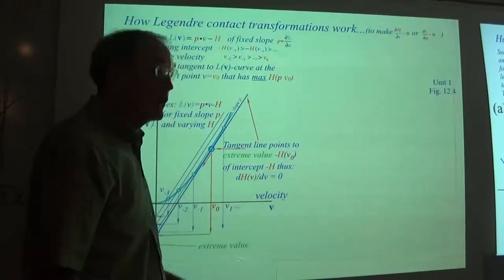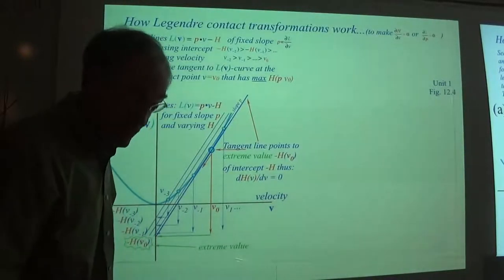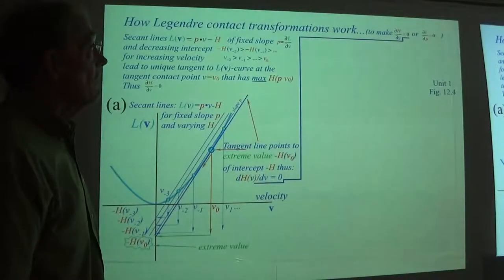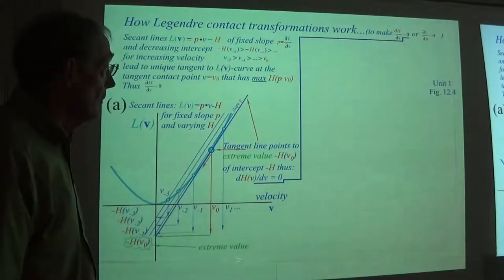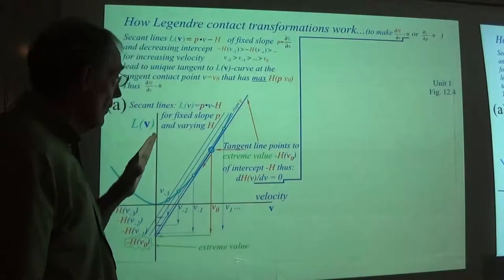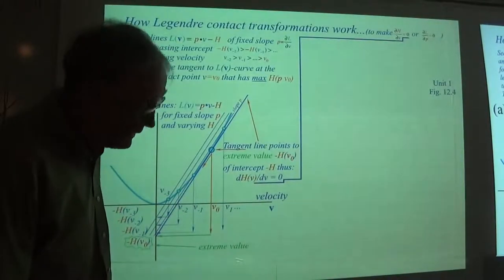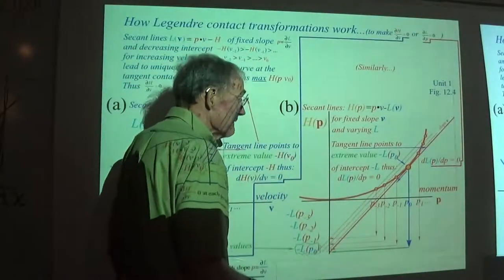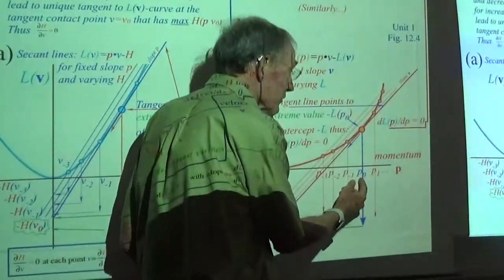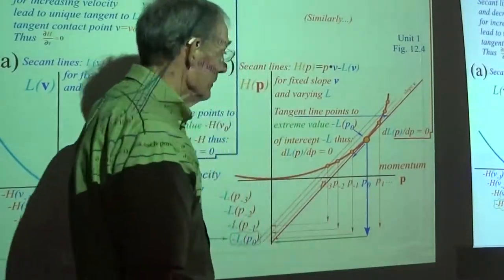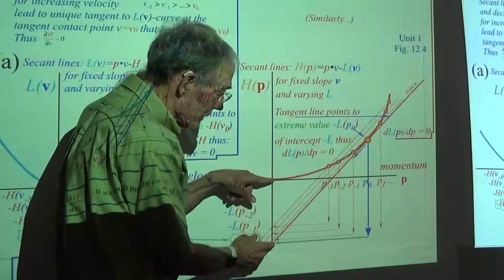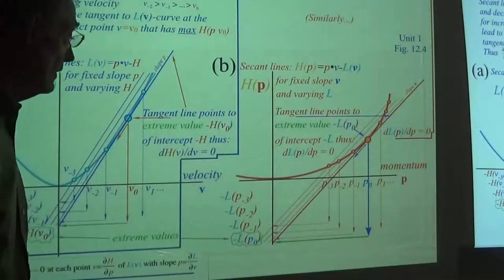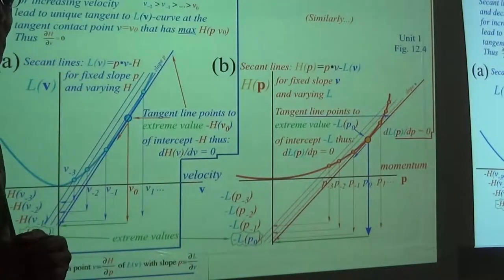The tangent line picks out the extreme value of the Hamiltonian as a function of velocity. We're only interested in the optimum value—where the intercept is the actual Hamiltonian. At that extreme value, there's no derivative with respect to velocity, giving zero. That's how you get zero for ∂H/∂V. It works for the Hamiltonian too, similarly: given certain momentum, the Lagrangian has no derivative; it's the extreme value of the Lagrangian intercept where it contacts the L(P) curve.